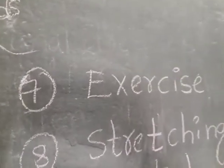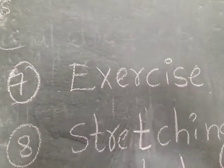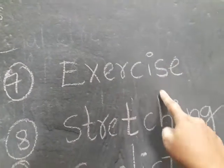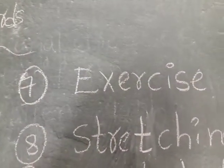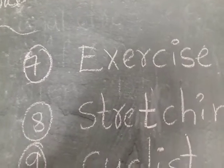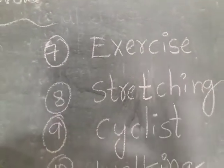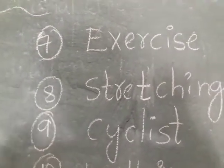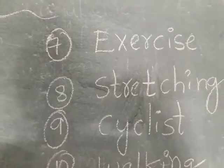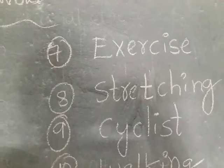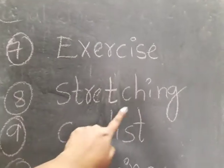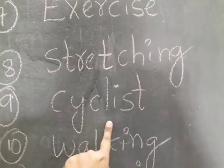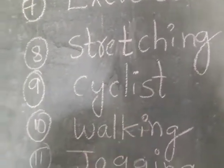Seventh one: exercise. E-X-E-R-C-I-S-E. Exercise. We can do early morning exercise. Eighth one: stretching. S-T-R-E-T-C-H-I-N-G. Stretching. Ninth one: cyclist. C-Y-C-L-I-S-T. Cyclist.